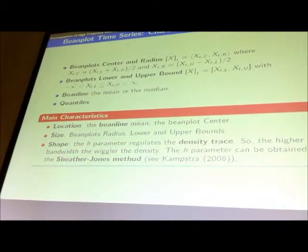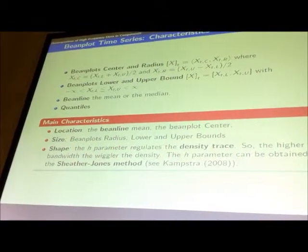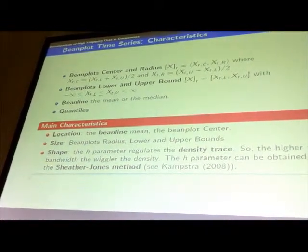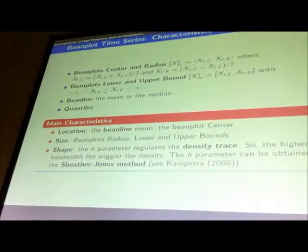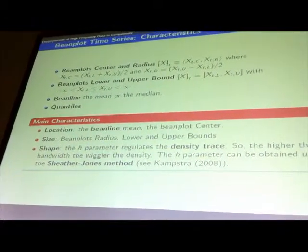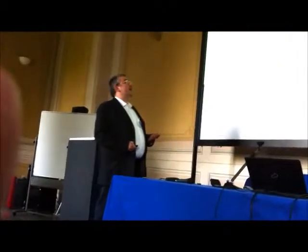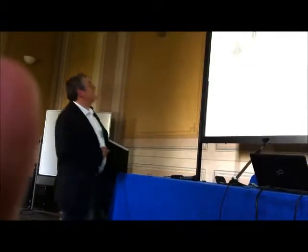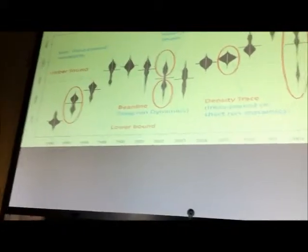The size would be an interesting measure. The shape is a new feature represented by the density trace, which is very important because it gives us the real structure of our data without any restriction. We can compare the real structure of our intraday observations. This is the bin-plot time series applied to real data — the Dow Jones daily data — in which we consider this type of data to analyze the financial crisis.